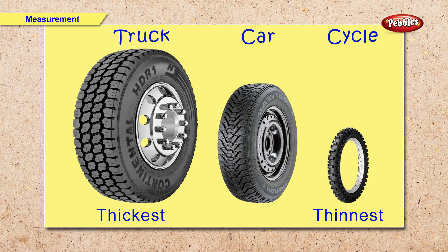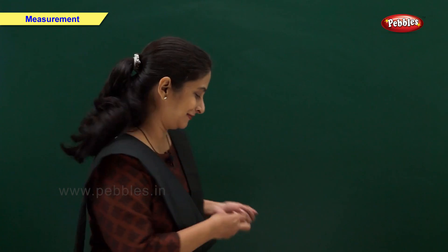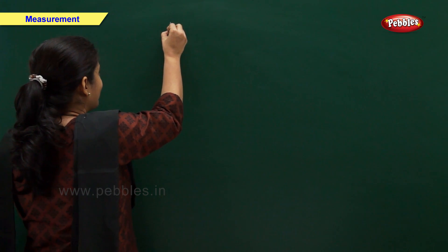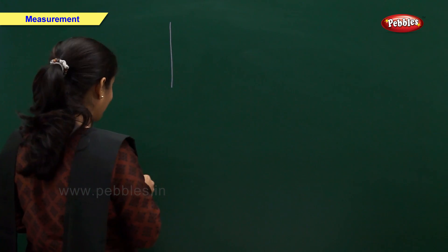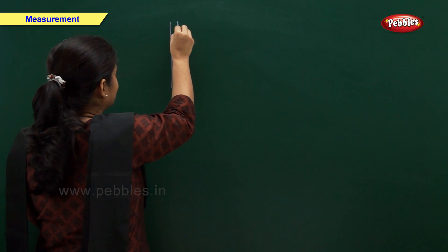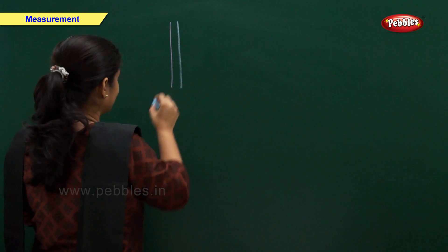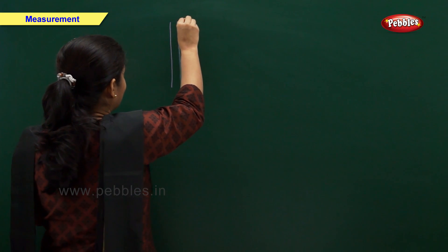Here we have a truck tire, a car tire and a cycle tire. And now you tell me which tire is the thickest and which tire is the thinnest. Right. The truck's tire is the thickest and the cycle tire is the thinnest. Now let us see thickest and thinnest.